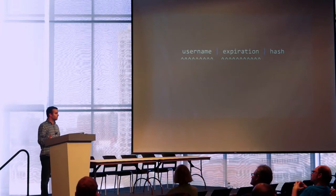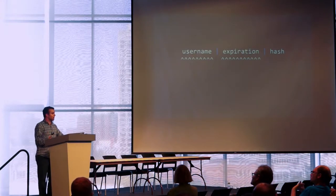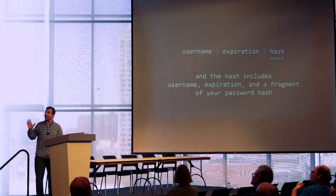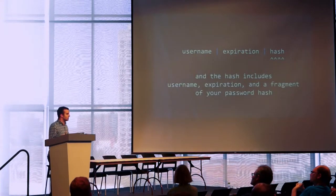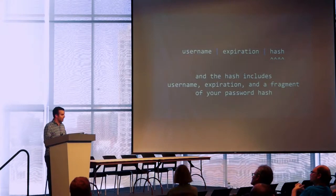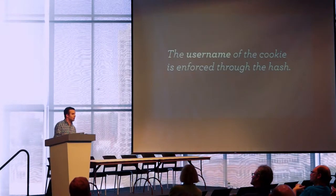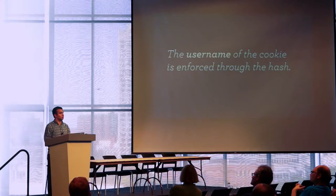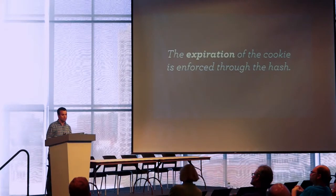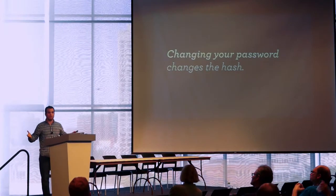Cookies themselves have an expiration, but we need to also enforce that expiration through other means. For example, maybe it's just a session-based cookie in the browser that we need to expire after 48 hours. Well, if you leave your browser open indefinitely, that cookie's never going to expire. We need to do it ourselves. So we have this hash as well. The hash includes secret information like secret keys, the username, the expiration, and a fragment of your password hash. By putting the username in the hash of the cookie, we enforce that that hash can only be used for that username. By putting the expiration there, we force that expiration to be part of this cookie hash. And by putting the password fragment — which is actually the fragment of the hash of your password — we make it so that if you change your password, the cookie immediately can no longer be used.